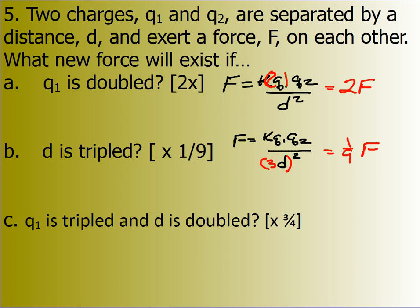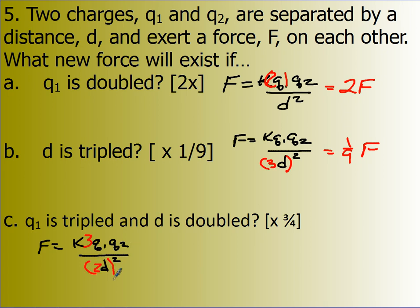F equals K Q1 Q2 divided by D squared. For this one, we're going to triple Q1 and double D. So we wind up with three divided by four — because that two is squared — times the original force.